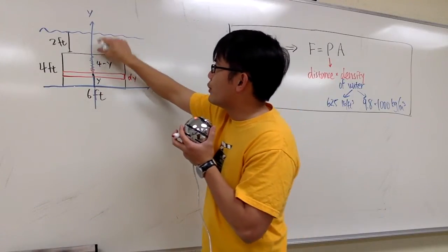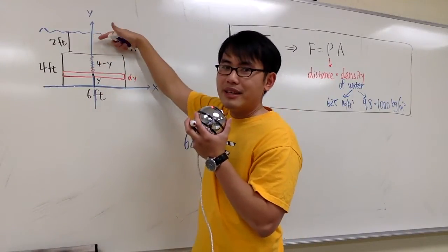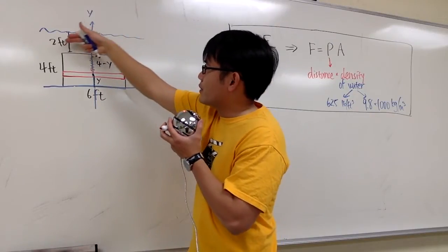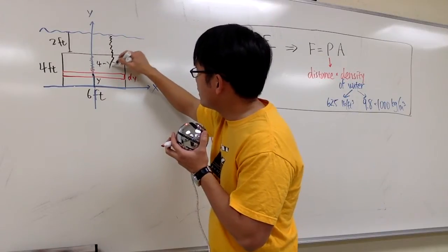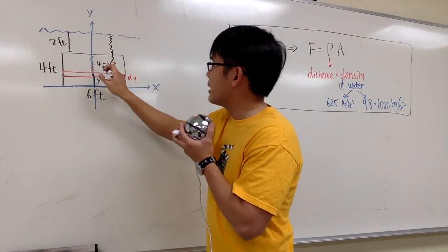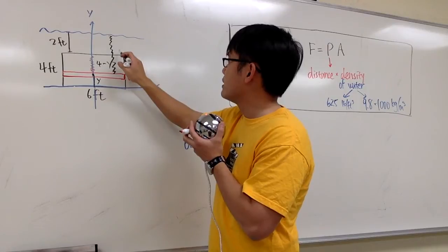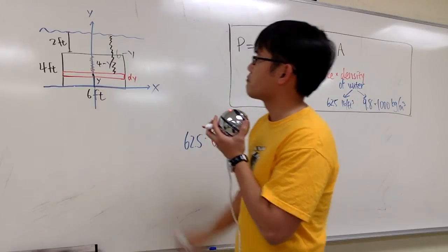But then we have to go 2, right? We have to add 2 to it, because technically, we are also like 2 feet down below. So the whole thing, all the way from here to here, is 2 plus 4 minus y. So that's 6 minus y. That's the distance.